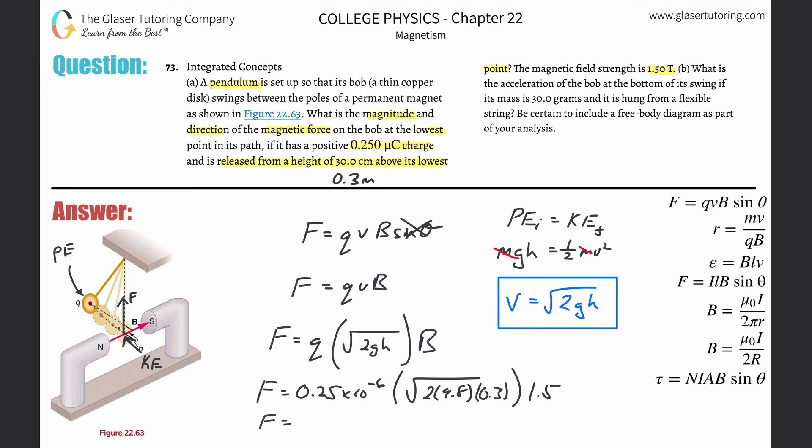So 0.25 times 10 to the minus 6th times square root 2 times 9.8 times 0.3, then multiplied by 1.5. So about 9.09 times 10 to the minus 7th newtons. We talked about the direction and now the magnitude. That takes care of letter A.